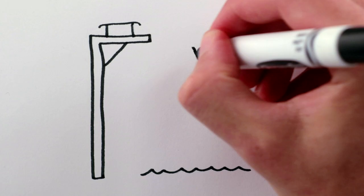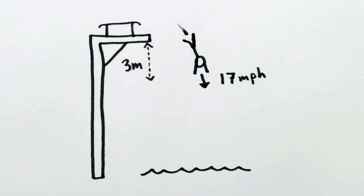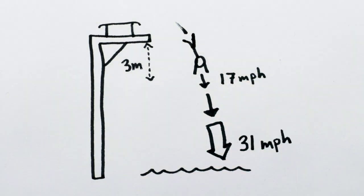Actually, this also applies to a falling rock, but rocks aren't nearly as good looking. Anyway, by the time a diver, or rock, has fallen 3 meters, they're already going about 17 miles an hour, and as they fall farther, they continue to pick up speed so that they cover the remaining distance in less time.